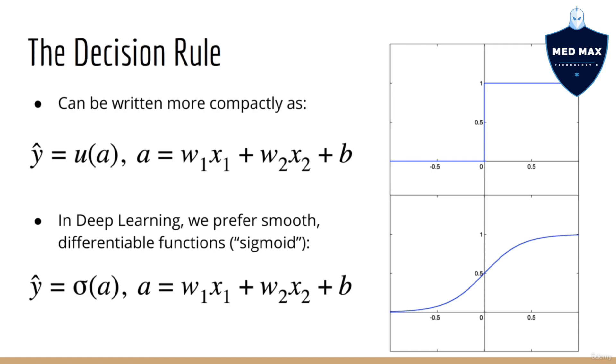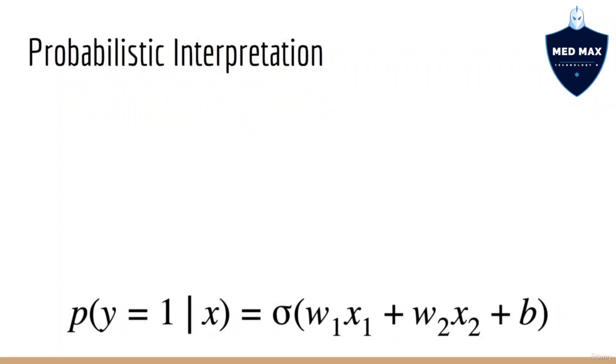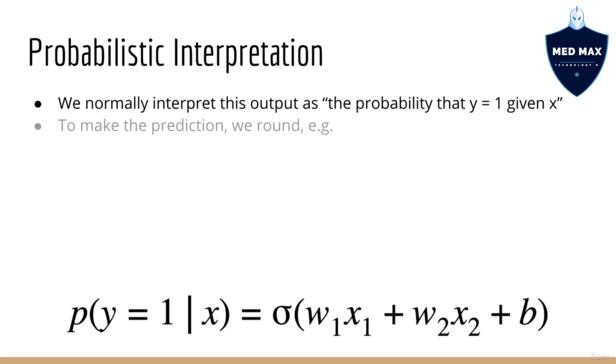Now, as you may already know, in deep learning, we really like differentiable smooth functions. So, rather than the step function, which is not smooth, what we do is take a smooth version of this, called the sigmoid. The sigmoid is an s-shaped curve, and it maps the activation to a number between 0 and 1. We usually interpret this as the probability that y equals 1 given x. Then, when we want to make our prediction, we just round this probability. So, if the probability is greater than 50%, we predict 1. Otherwise, we predict 0. Again, this is called the sigmoid function, which is important to know for our implementation.